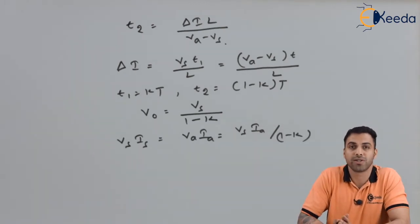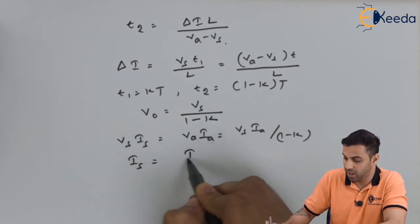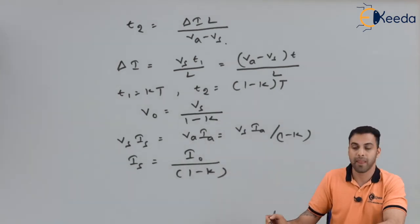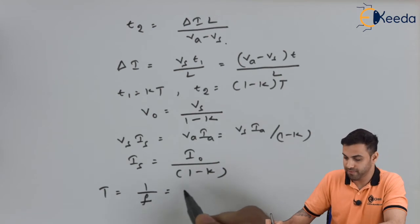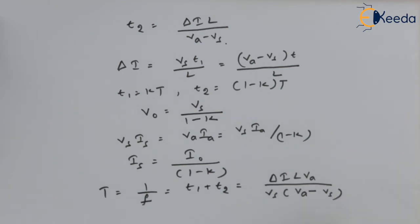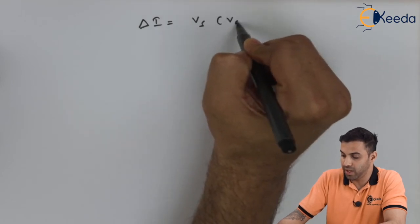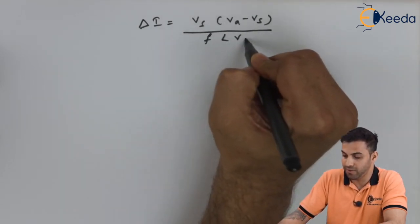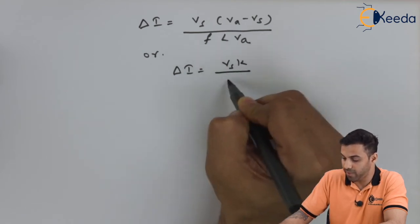Assuming no switching loss, by substituting into the equation we get Is equal to I0 divided by (1 minus K). The total time period T equals T1 plus T2, which equals delta I times L times Va divided by (Vs times (Va minus Vs)). The peak-to-peak ripple current equals Vs times (Va minus Vs) divided by (F times L times Va), or equivalently delta I equals Vs times K divided by (F times L).